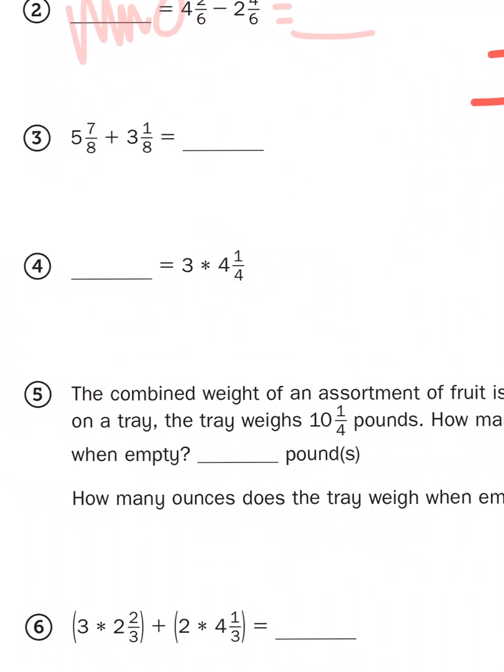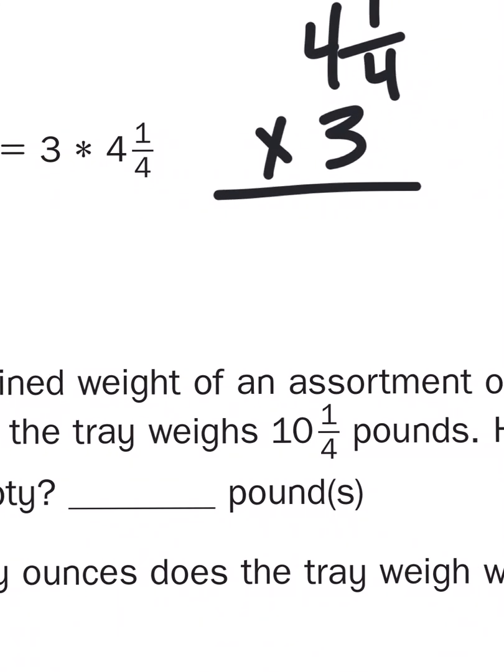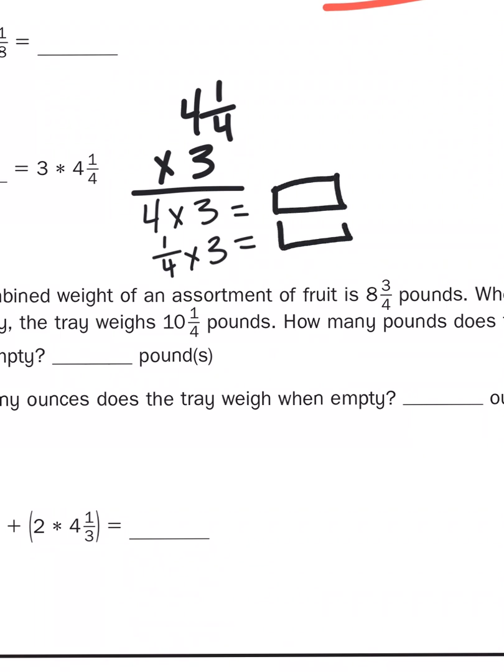Then we get to problem number four, 3 times 4 and 1 fourth. And again we can use our knowledge of multiplication to help us out here, 4 and 1 fourth times 3. The placement of the factors will not affect the product. And since this is a multiplication problem with a number that has two place values I can use partial products to help me solve, so I'm going to multiply 4 times 3 and then I'm going to multiply a fourth times 3 and then once I have those two products I will add them together to get my total product. That's why they call this method the partial products method. So far so good. It's all sounding familiar.